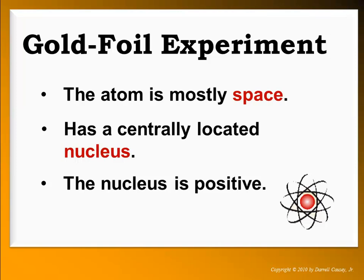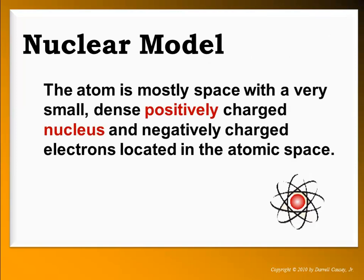He put together a pretty good experiment, and it turns out that the atom is mostly space, but there is some kind of dense area in there, and he called it the nucleus. He suggested the nuclear model: the atom is not a plum pudding — a positive blob with electrons embedded in it — but the atom is mostly space, with a very small, dense, positively charged nucleus, and negatively charged electrons located in the atomic space.